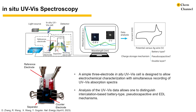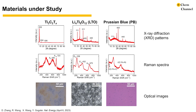We showed that analysis of the UV-Vis data allows one to distinguish intercalation-based battery type, pseudocapacitive, and EDL mechanisms. In this study, we tested pseudocapacitive material Ti3C2 MXene and two battery materials, lithium titanate (LTO) and Prussian blue, to show the wide applicability of the in-situ UV-Vis technique. The X-ray diffraction patterns and Raman spectra of the materials spray-coated on glass substrate show their correct signatures, and the optical micrographs show the morphology of the materials on the glass substrates.